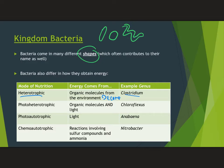Some bacteria can be chemoautotrophic, meaning they gather energy through various chemical reactions that involve sulfur compounds. Nitrobacter — bacteria that grow around the root systems of plants — tend to be chemoautotrophic. So bacteria have a much wider range of energy sources than we do.